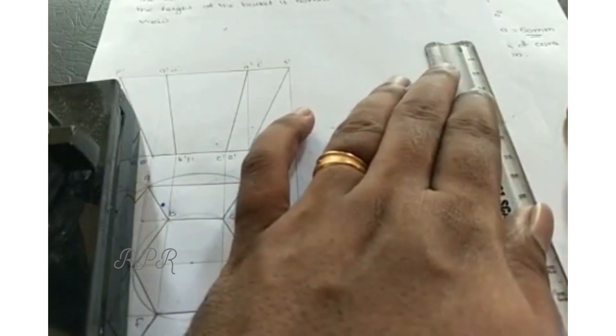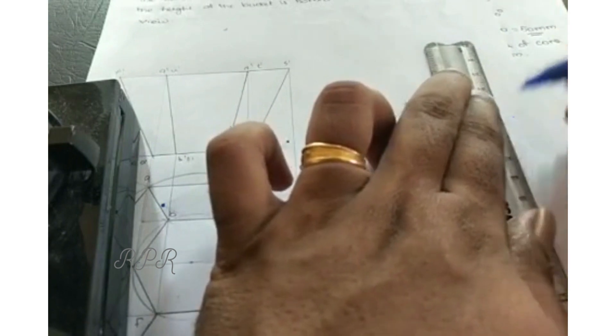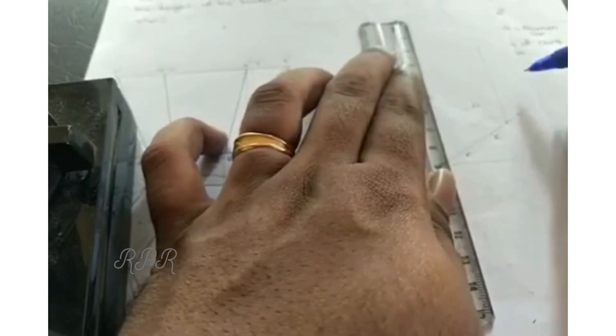Now we will extend this to 50mm height. Because the height of the frustum is 50mm. So 20, in this small box we will build.